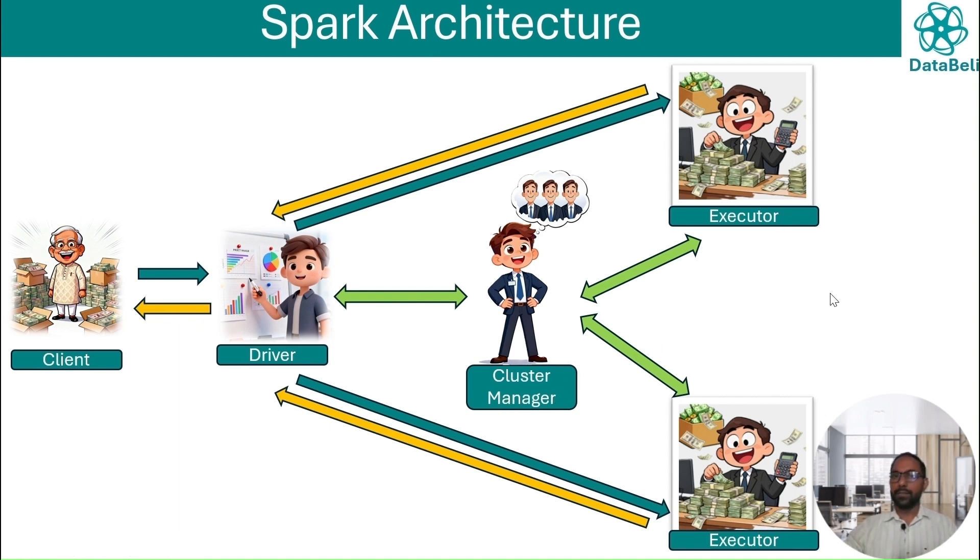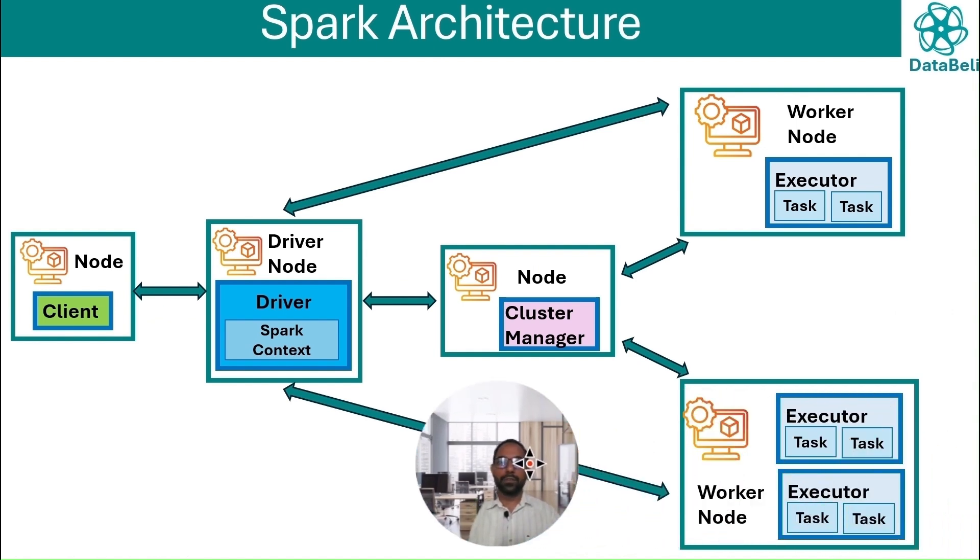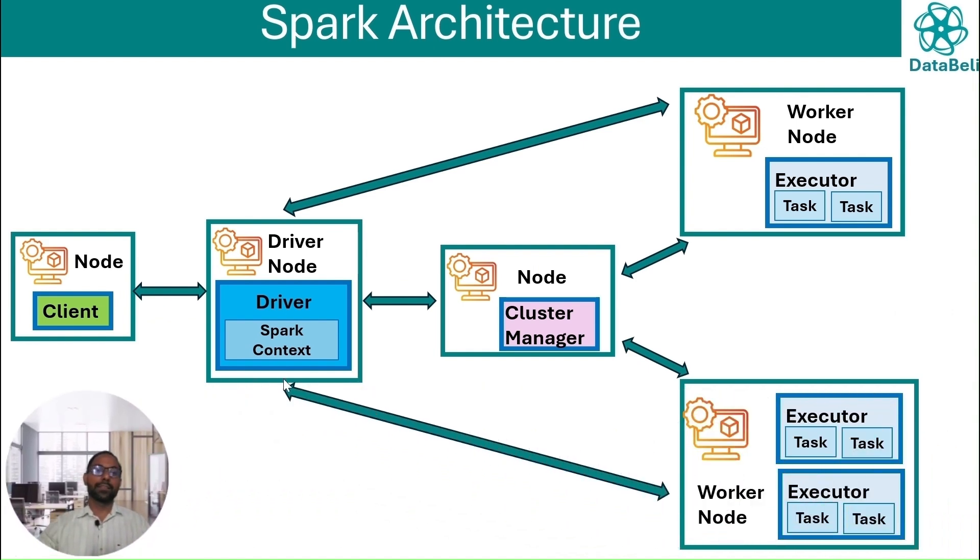So these are all the components involved in Spark. This is just the analogy, and in real life all these components are processes or programs which run on different machines. Let's say the client will be running on one machine, and in the client we will write the code and submit the code.